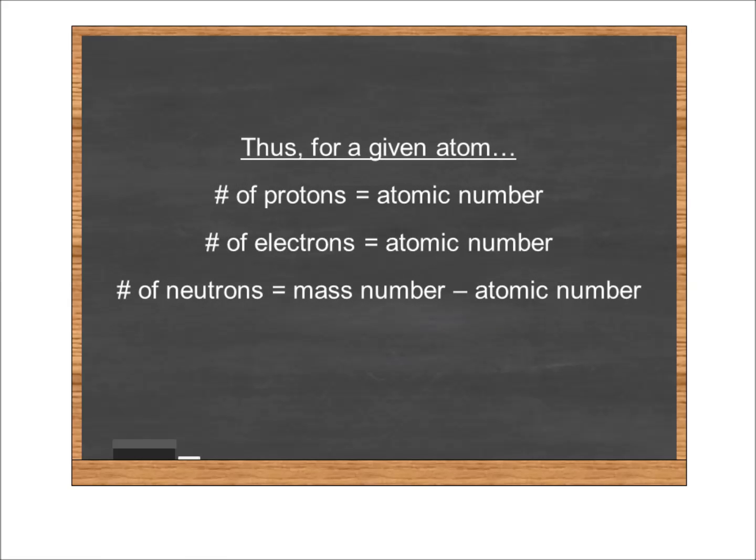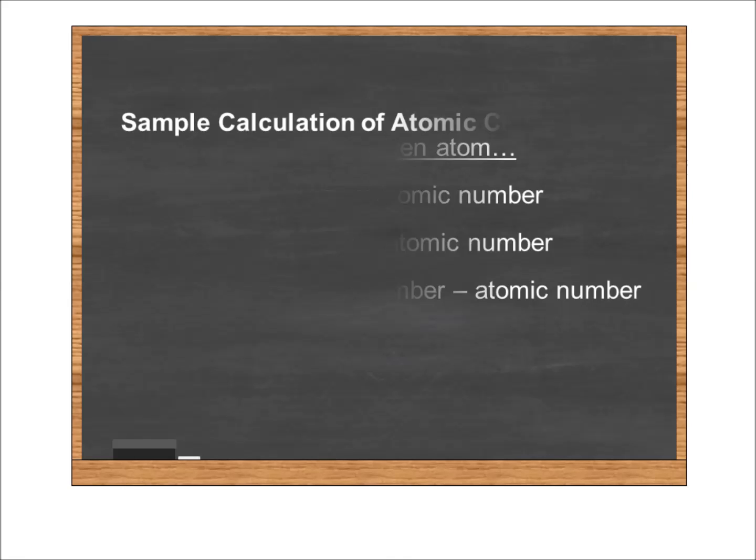So let's summarize. The number of protons in an atom can be derived from its atomic number. The number of electrons is the same as the number of protons if it's an atom, so that's also the atomic number. And the mass number tells us how many particles are in the nucleus, so if we subtract atomic number from mass number, that tells us how many neutrons are in the atom.